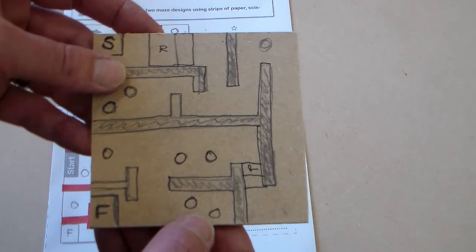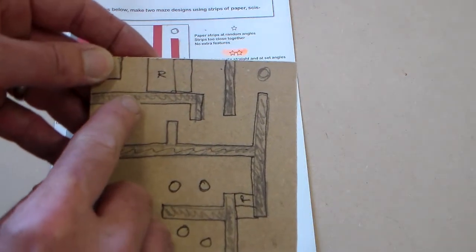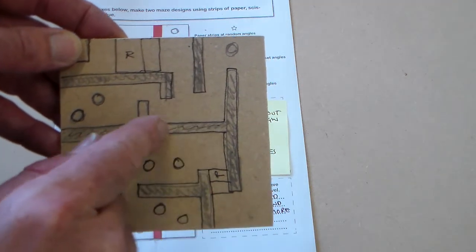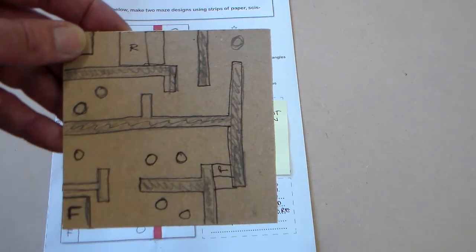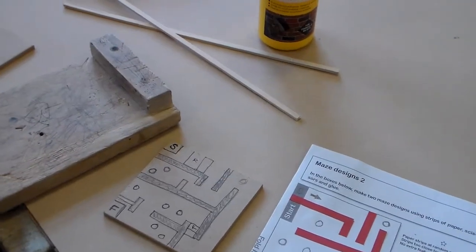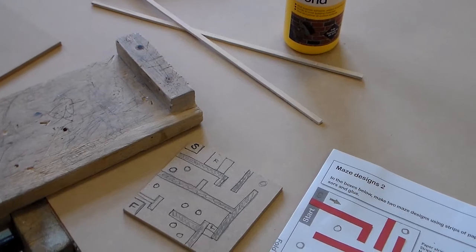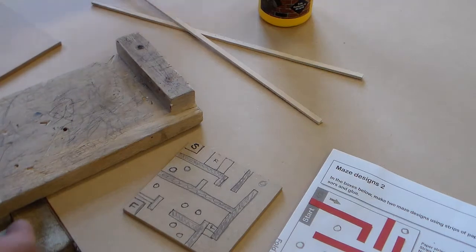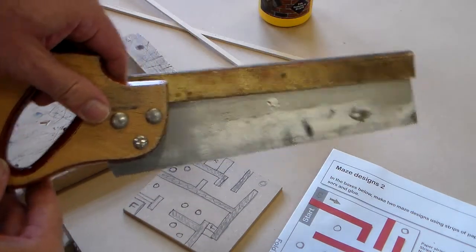So the first thing we're going to do is start to cut the plywood strips for the walls of our maze. What we need for this is plywood strips, some PVA glue, and a tenon saw.